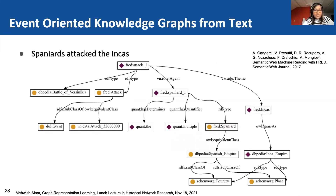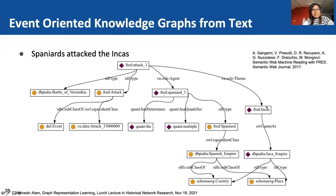Let's start with generating knowledge graphs from text using the event information. Here you see one existing tool called FRED, which does that. Given the sentence 'Spaniards attacked the Incas,' the verb 'attack' gives the event information. The agent is the Spaniard and the theme is the Incas. Since Spaniards is plural, there is a 'multiple' quantifier. These entities are further connected to other data sources like DBpedia, schema.org, and DOLCE — foundational ontologies — producing semantically rich knowledge graphs from text.